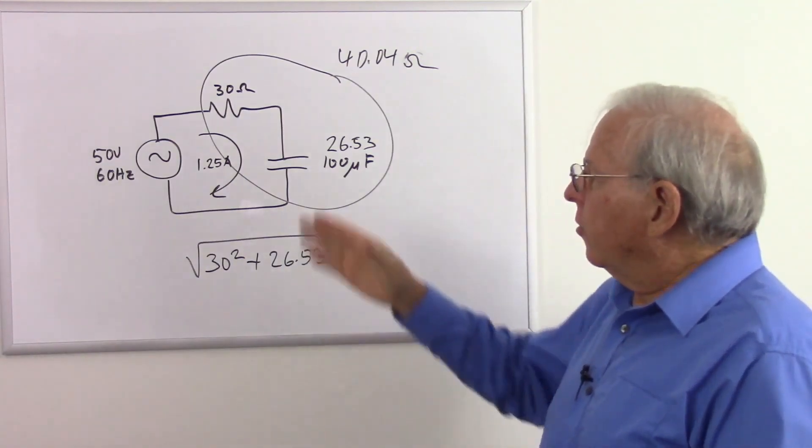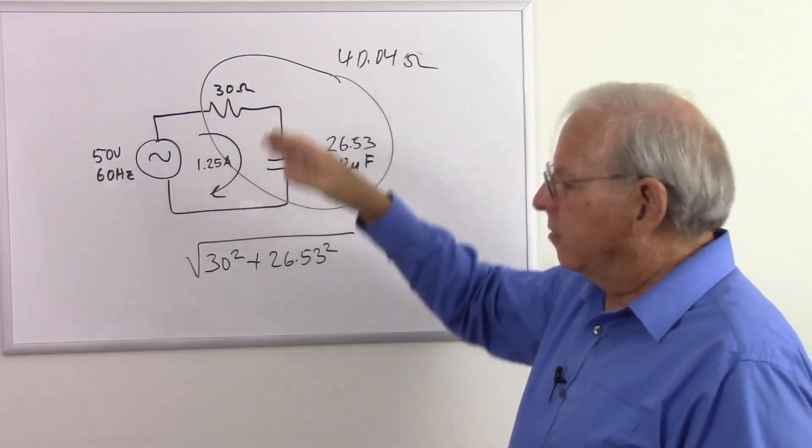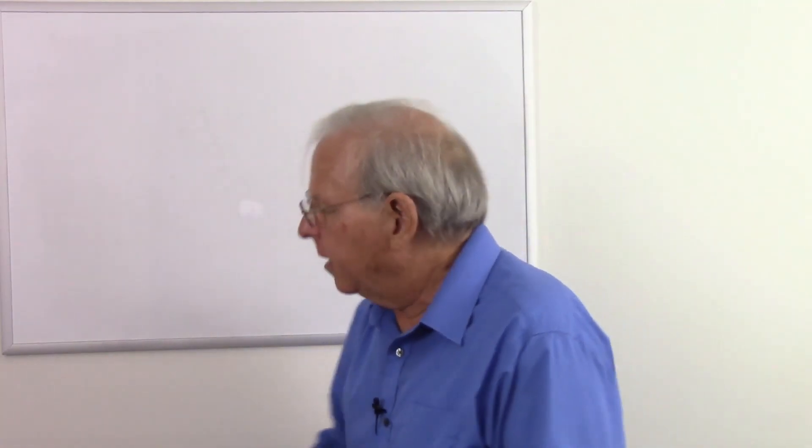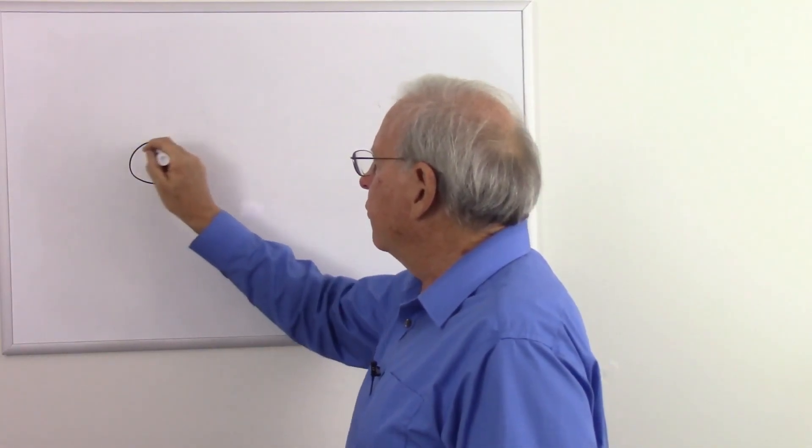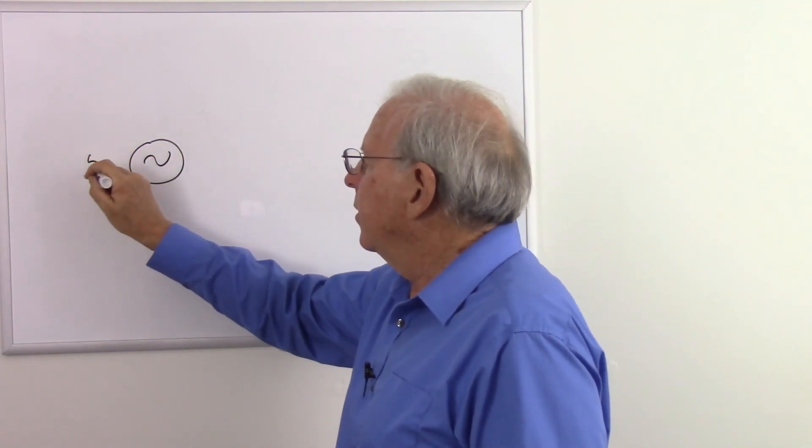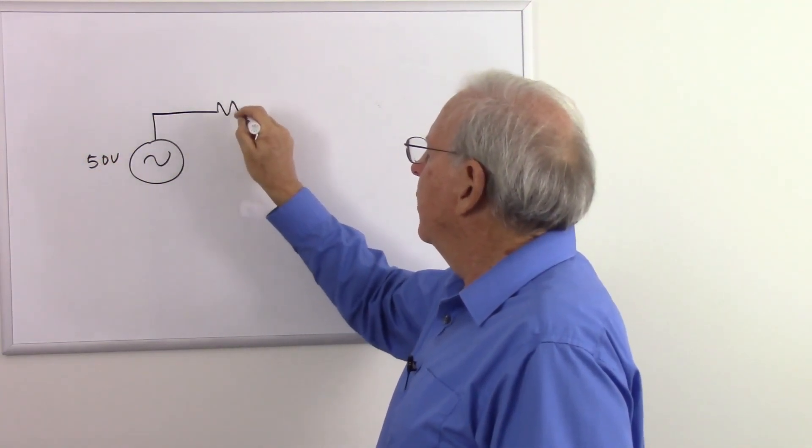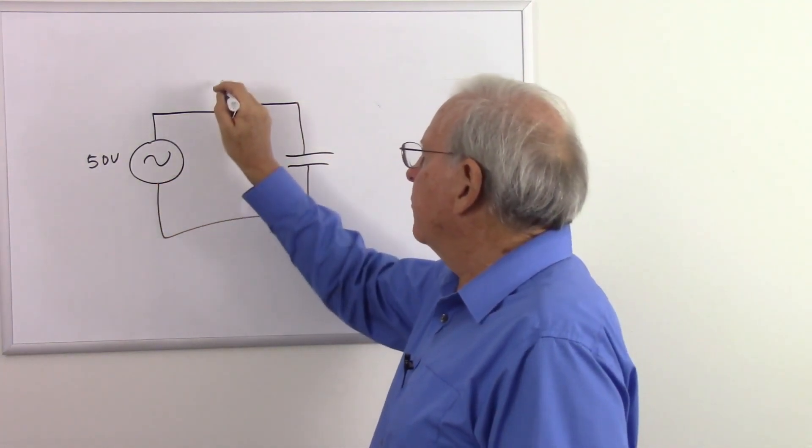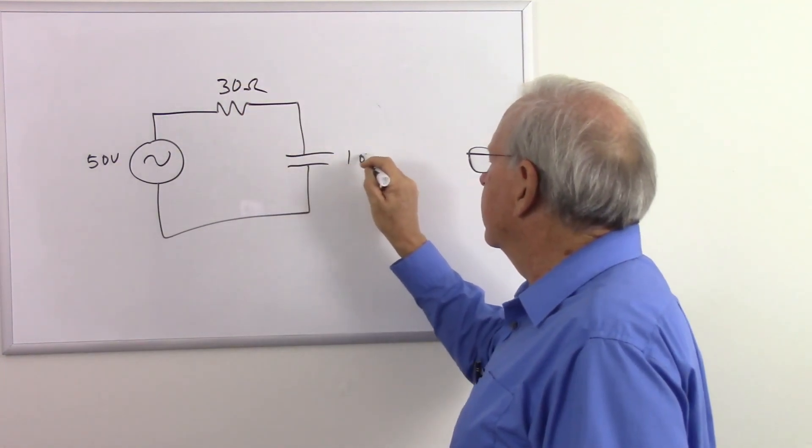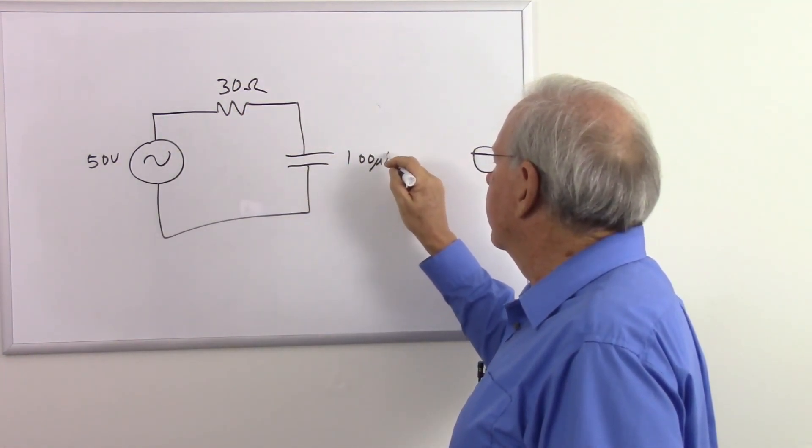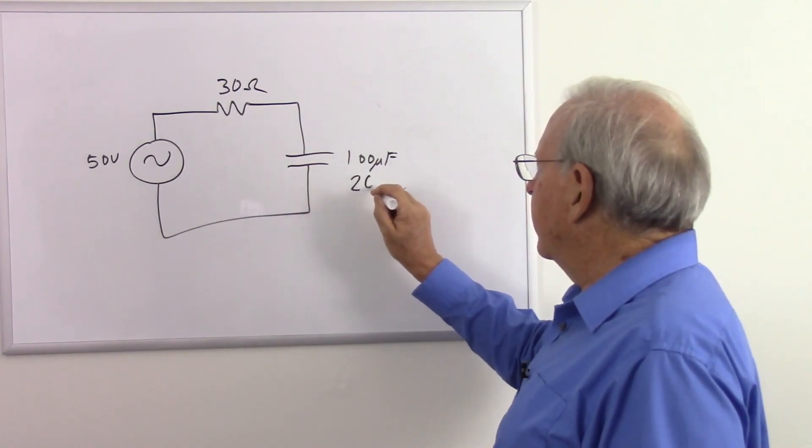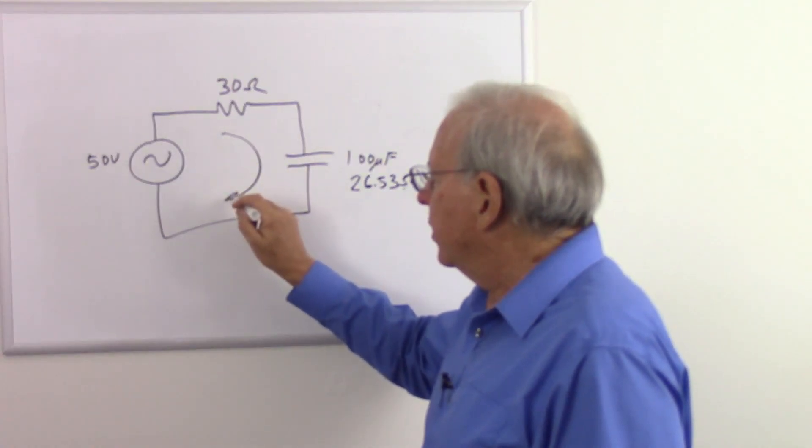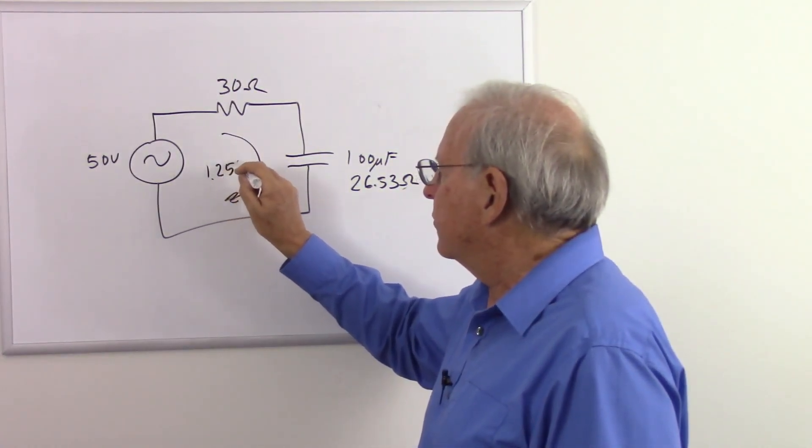So now that I know the current through the circuit, I can calculate the voltage across these two components. Let's redraw this just to clean it up a little bit here. So here's my source, 50 volts, 30 ohm resistor, 100 microfarad capacitor, and we know that is 26.53 ohms of capacitive reactance, and we know this is 1.25 amps. We're getting closer.